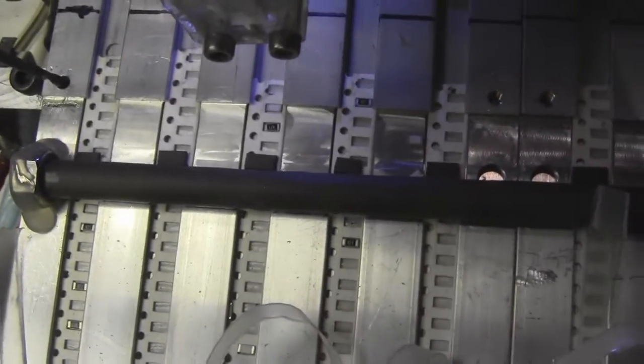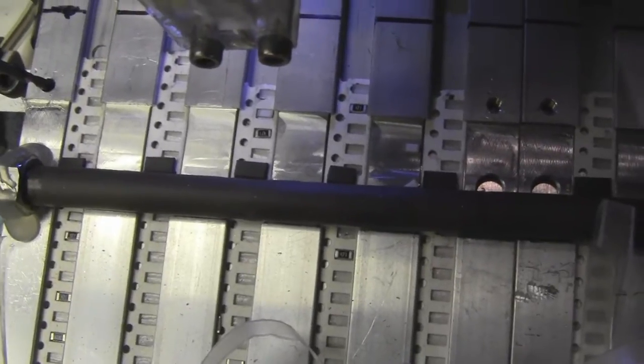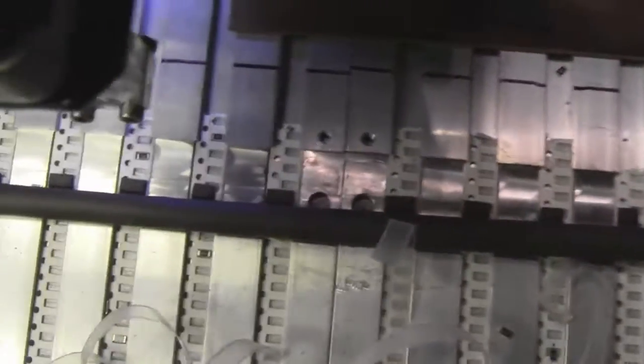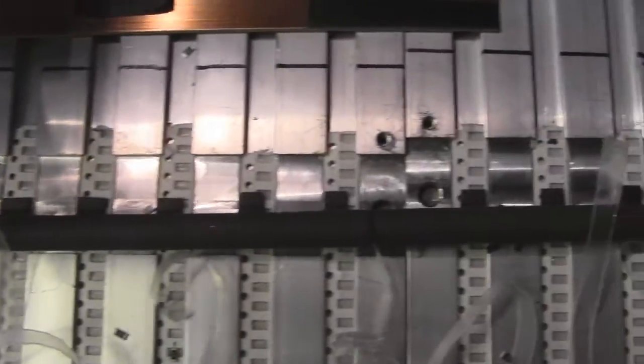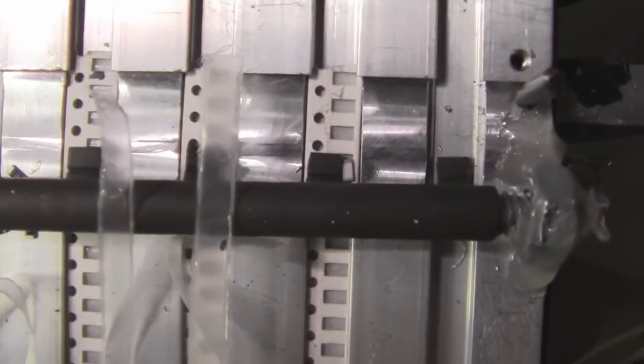That brown thing there, or black thing, is weather stripping—rubber weather stripping. They have a hollow column in there and I'll put a rod through there and cut it out so that they sit on top of the tape strips.